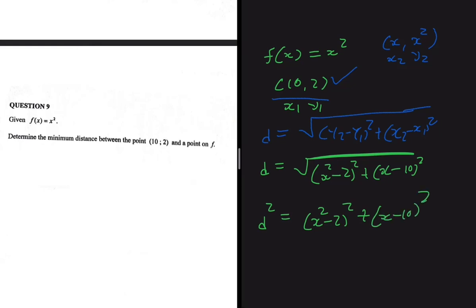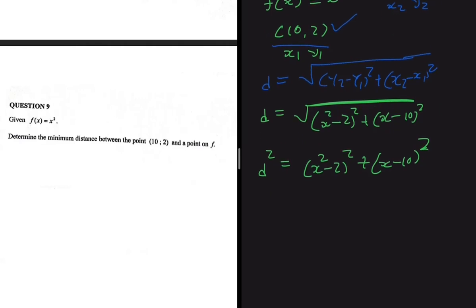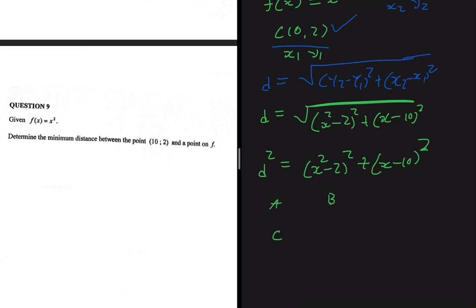The brilliant thing about distance is that if the distance from A to B is greater than the distance from C to D, even if you compare the squared distances, C to D will still be smaller. So instead of using distance, we can just use distance squared — it makes our life much simpler.